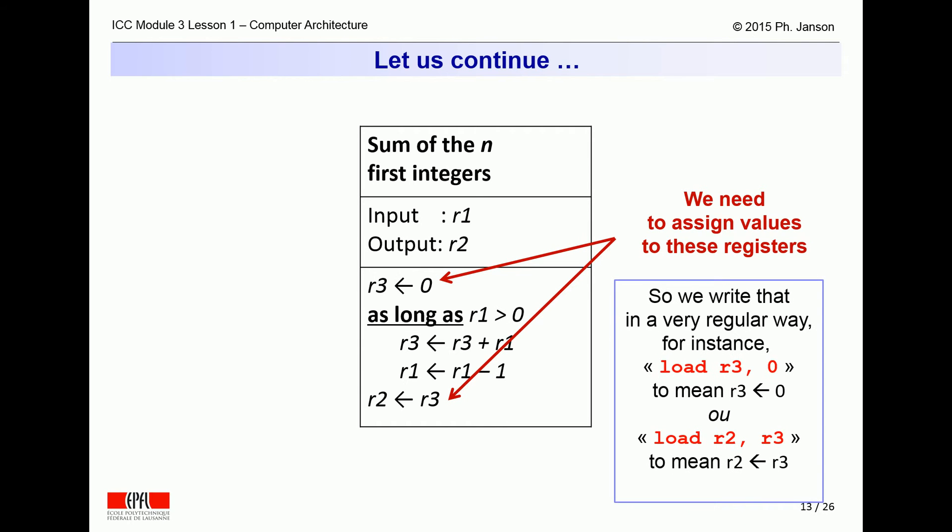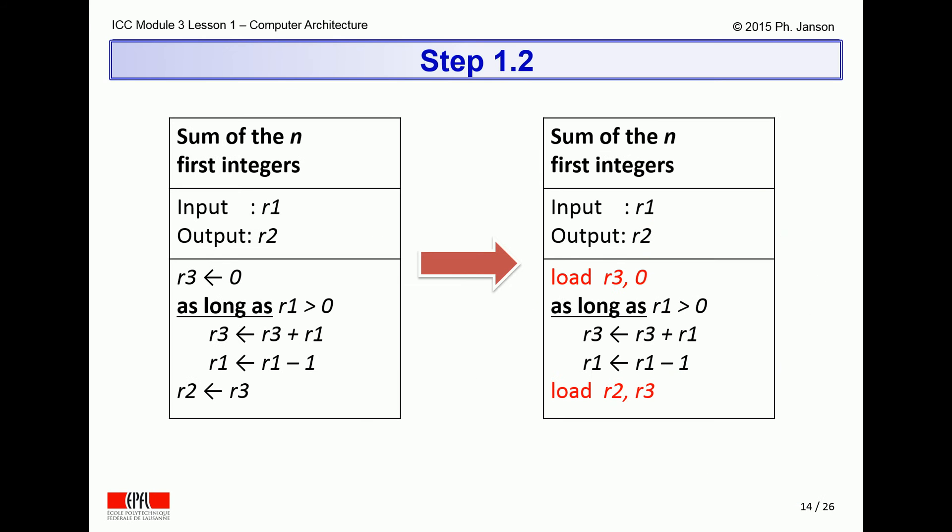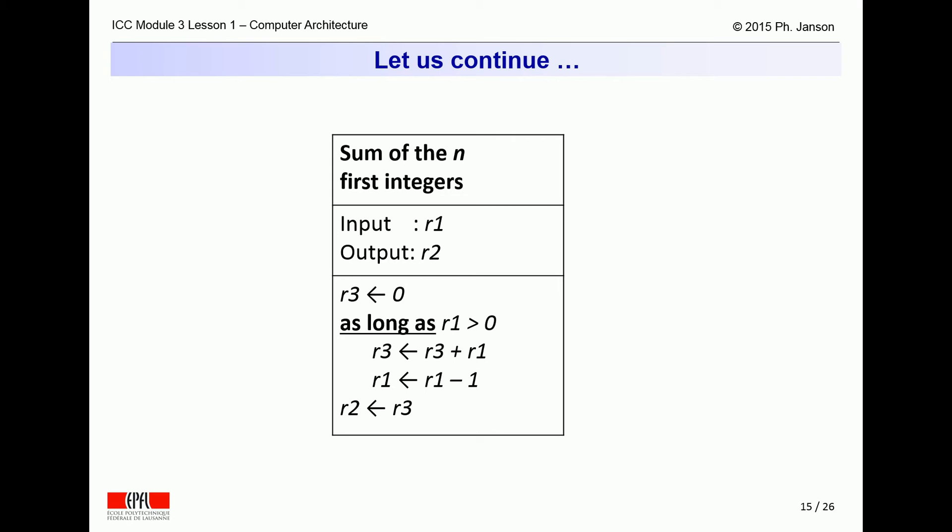This is done by writing such assignment instructions in a very rigid way such as, for instance, load r3 with 0 or load r2 with the contents of r3. Given this conventional formalism, the original algorithm is rewritten as on the right side of this slide. But again, this is still not sufficient for a computer to be able to understand the whole algorithm.